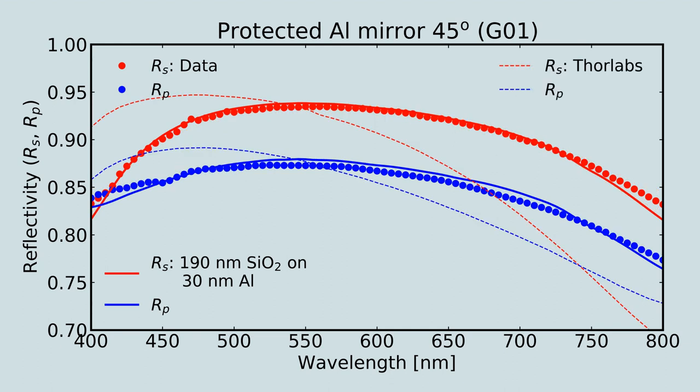These tests suggest that the representative data provided by the manufacturer may not be all that representative. This cautionary tale underscores the necessity of direct measurement for critical applications where the absolute reflectivity of a single mirror must be known to better than 10%.